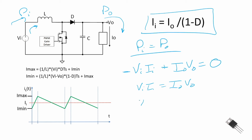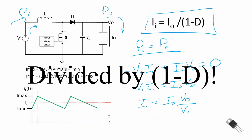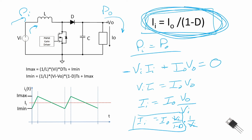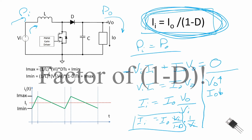Solving this equation: I_in = I_out · V_out / V_in. Since V_out = V_in / (1 − D), the V_in terms cancel out, giving us I_in = I_out / (1 − D). So as output voltage increases beyond input voltage, output current decreases, and correspondingly input current must be greater than output current — all by that factor of 1/(1 − D).